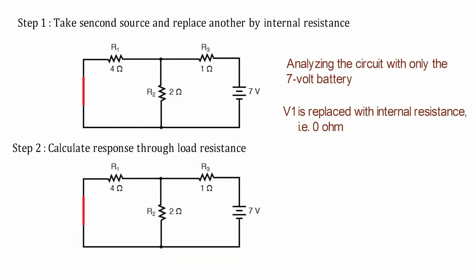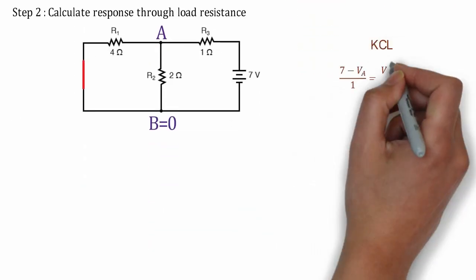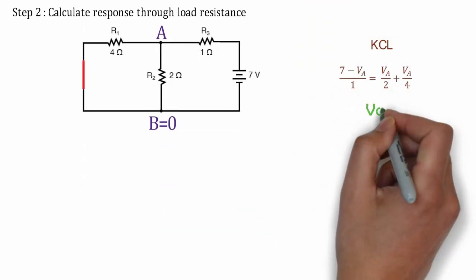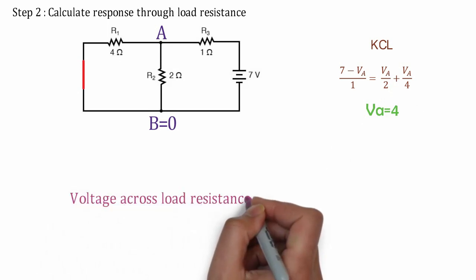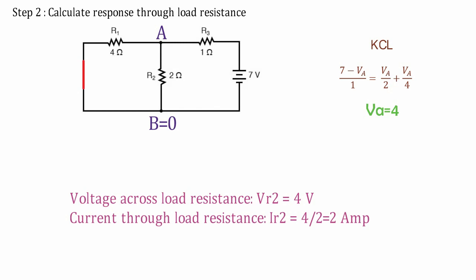Here also, we are going with Kirchhoff's current law for the circuit solution. After solving this equation, we are getting 4V as a load voltage and 2A as a load current.